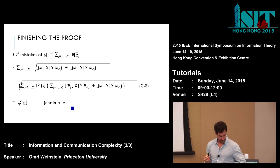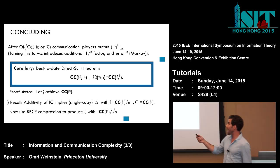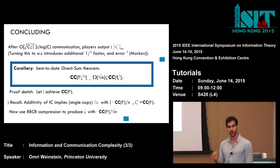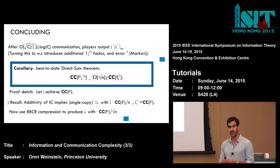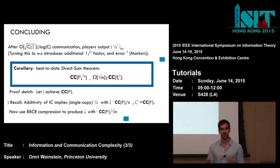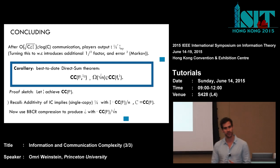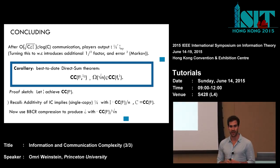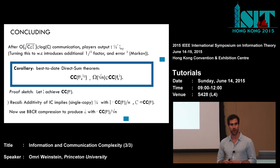In conclusion, after roughly sqrt(i * c) communication, the players obtain a correctly distributed path according to the correct distribution. To turn this expectation guarantee into a worst-case bound, we can pay another log(1/epsilon) factor in communication, absorb another small error, and turn this into a worst-case guarantee. This pretty much concludes the proof.